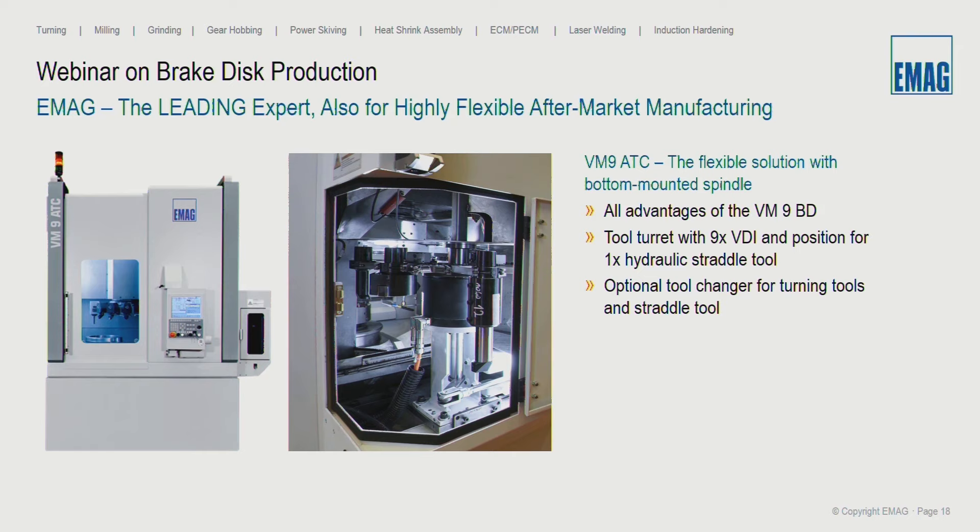Last but not least, we have an automatic tool change system — the VM9 ATC. This machine type allows loading of the tool magazine while the machine is running, with a completely split area for the working process and tool changers. This machine can automatically load and unload turning tools, drilling tools, milling tools, and even straddle tools — so you can prepare the next straddle tool for the next operation and load it during production.